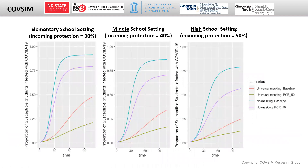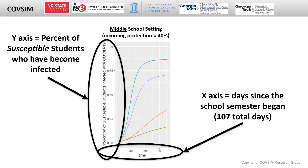Here are our school results across a few graphs for our three different settings: elementary school, middle school, and high school. Let's walk through what's happening on these graphs before we try to interpret them. The x-axis represents the number of days since the start of the semester. The y-axis represents the fraction of susceptible students who become infected throughout the semester. For a population of 500 and an incoming protection of 30%, the semester begins with 350 susceptible students. If 35 of these students became infected, the trend would reach 10% on the y-axis.